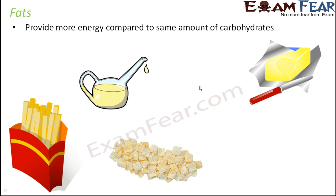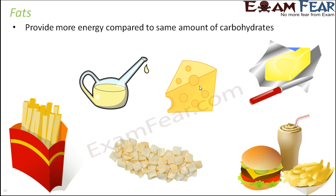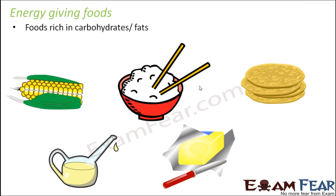Food items rich in fat include butter, ghee, oil, fried foods, and fast foods like pizza and burgers which contain a lot of cheese and butter. Because both carbohydrates and fats primarily provide energy, food items rich in carbohydrates and fats — such as rice, bread, chapati, cereals, ghee, butter, and cheese — are all termed energy-giving foods.